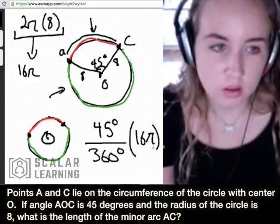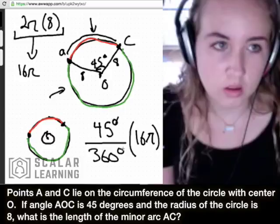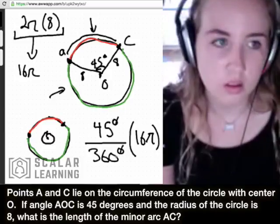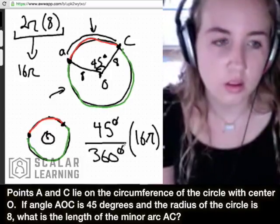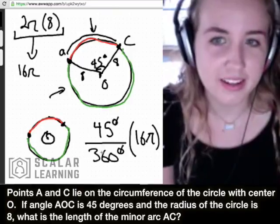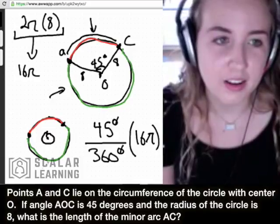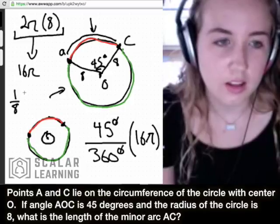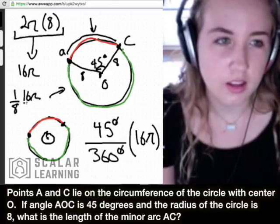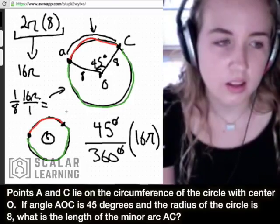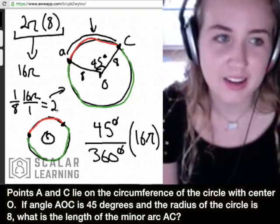We don't need the degrees symbol. So what is 45 over 360, what does that reduce to? What do you think? 1 over 8. Yeah, very good! So we'll write that up here. So now we have 1 over 8 times 16π over 1. What does this reduce to? 2π. That's it.